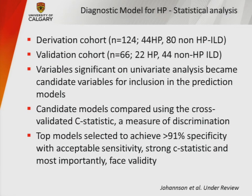Variables significant on univariate analysis went into the potential model. Candidate variables were combined and a C-statistic was computed — a measure of discrimination reflecting how accurately you can predict whether a given person has the disease or not. We wanted a model with specificity greater than 91%, consistent with what's been done in the IPF literature, and with face validity — something applicable in clinical practice with reasonable ease.